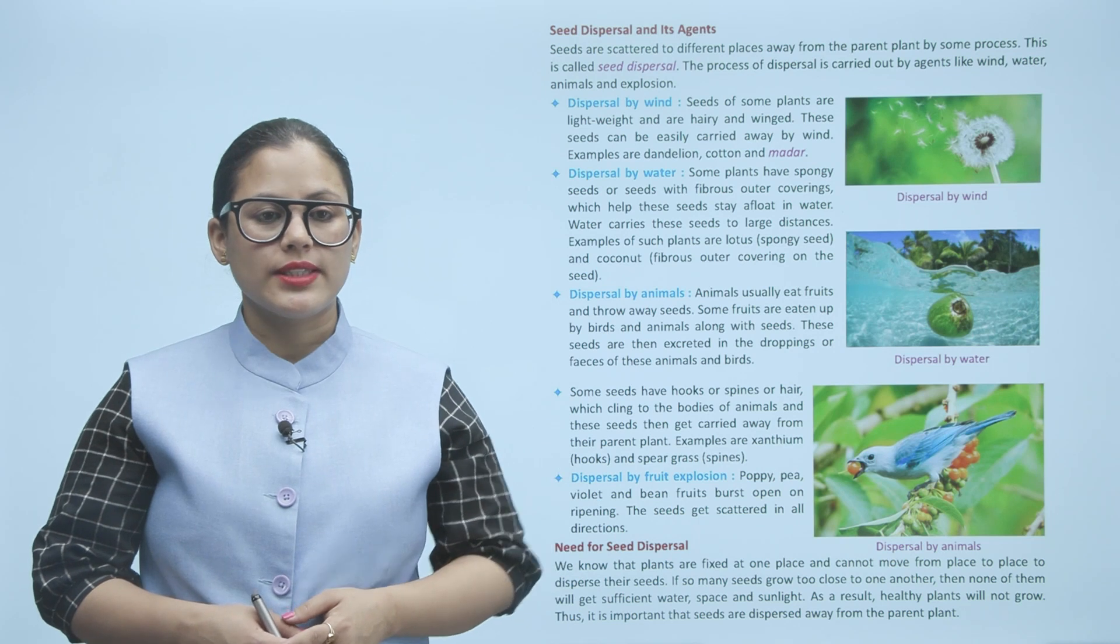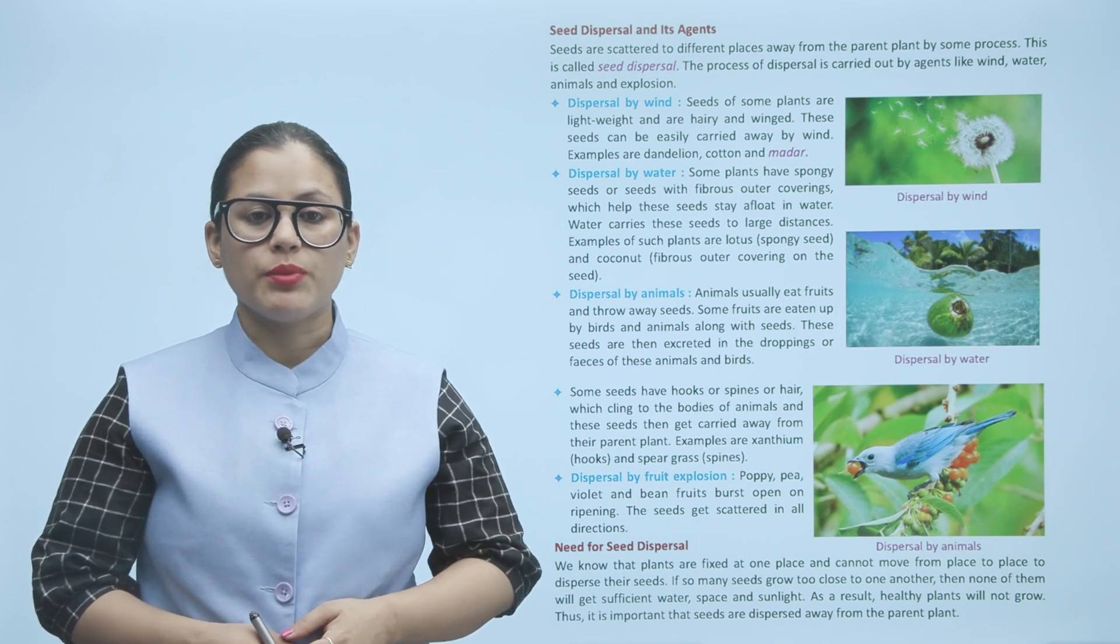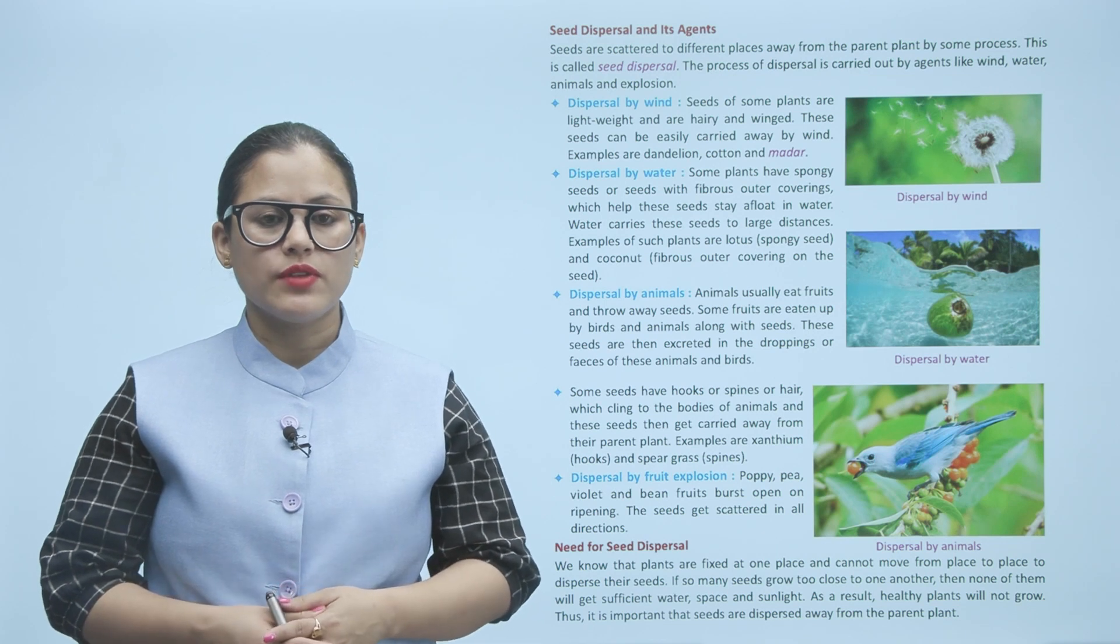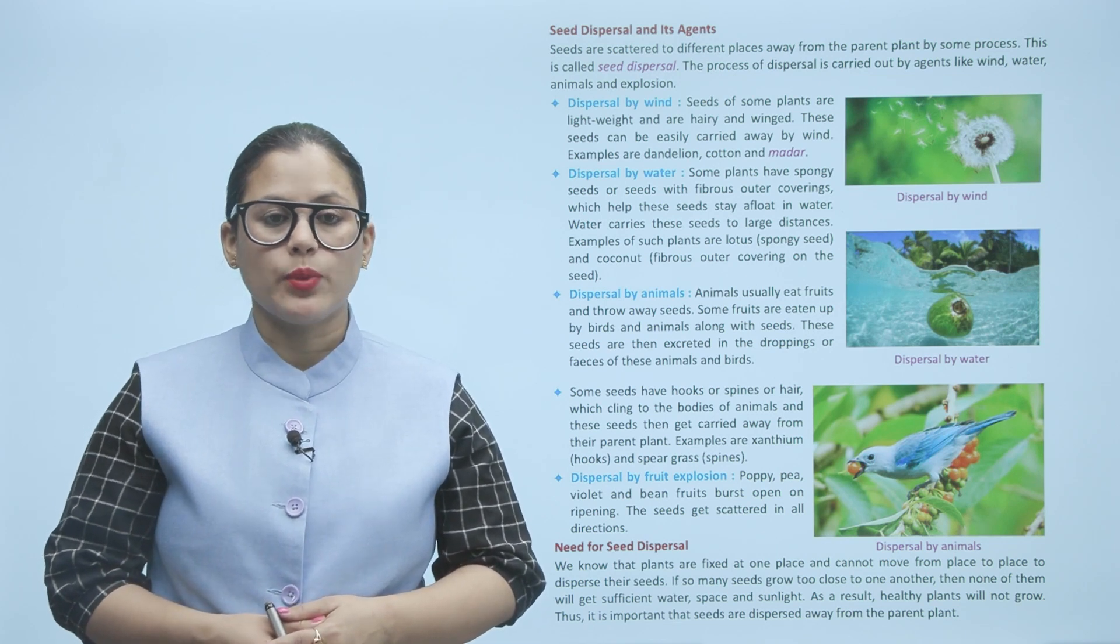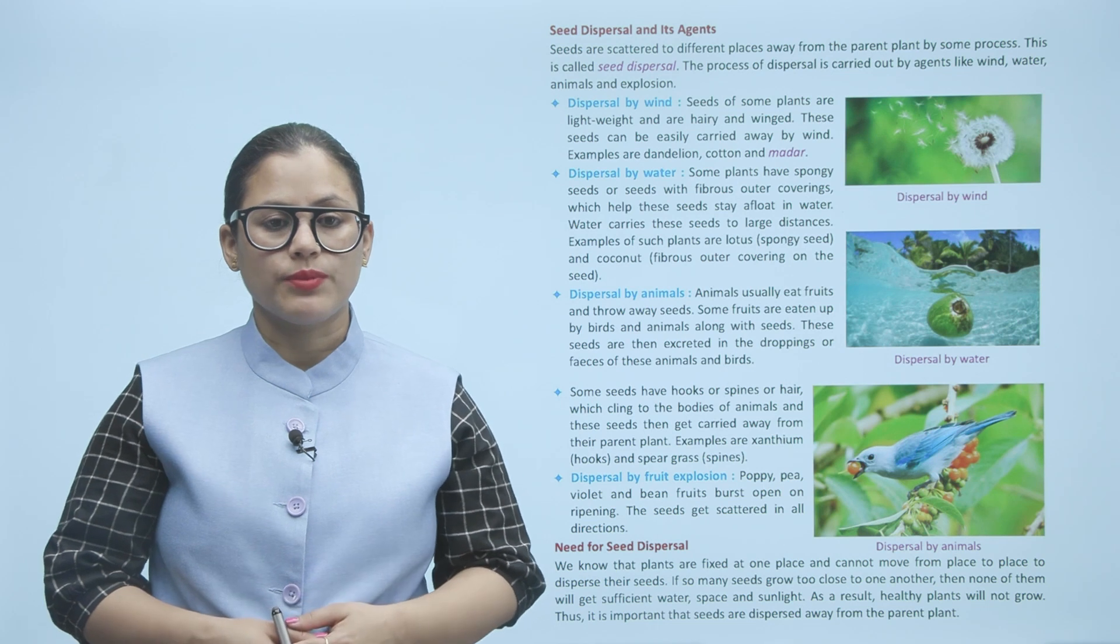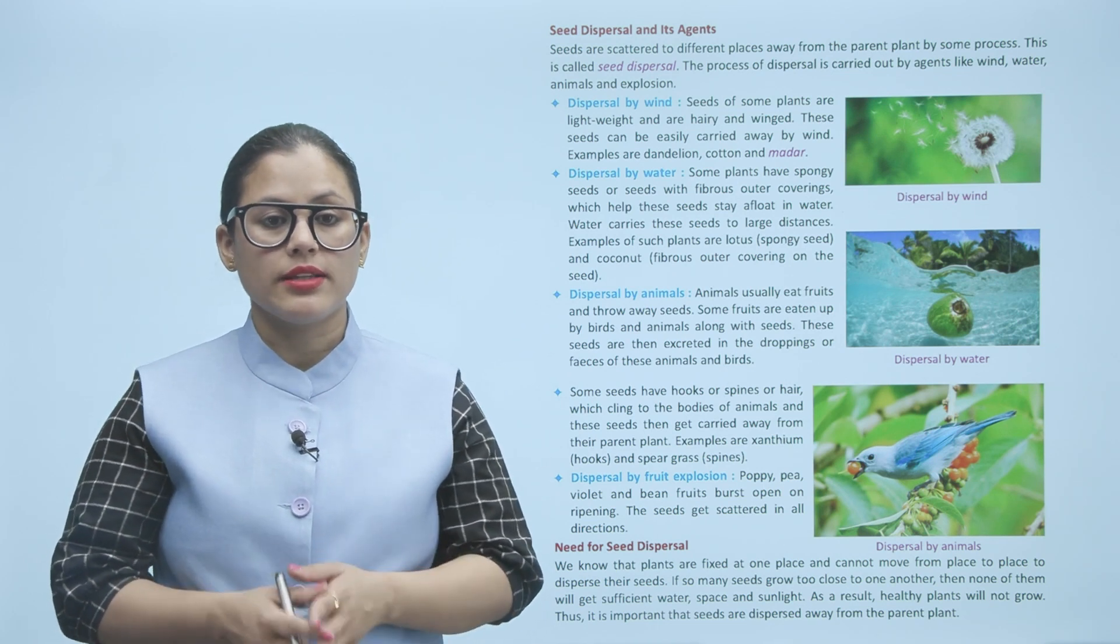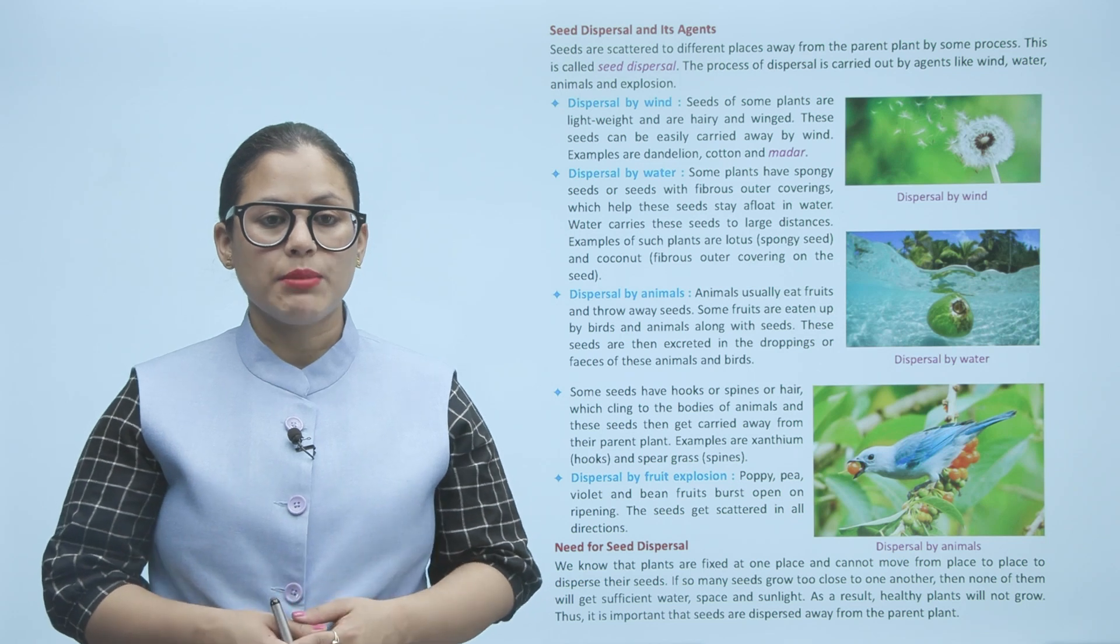Seed dispersal and its agents: Seeds are scattered to different places away from the parent plant by some process. This is called seed dispersal. The process of dispersal is carried out by agents like wind, water, animals, and explosion.